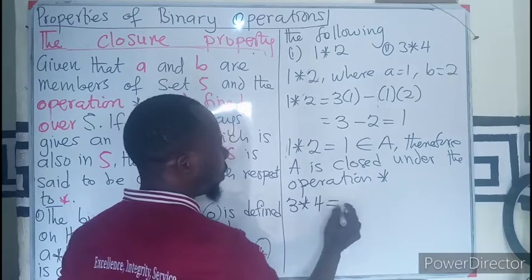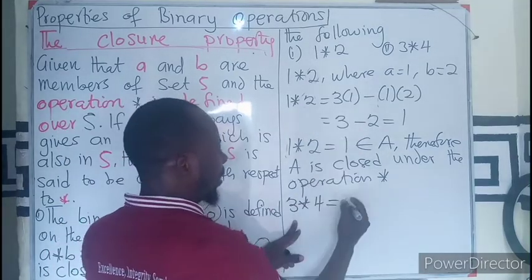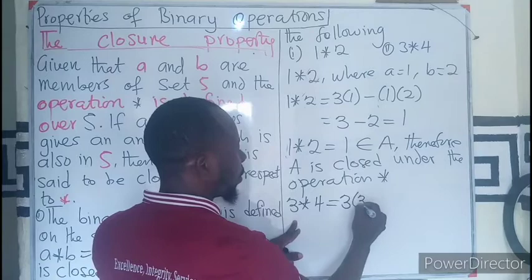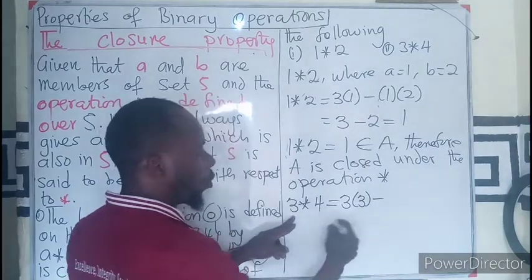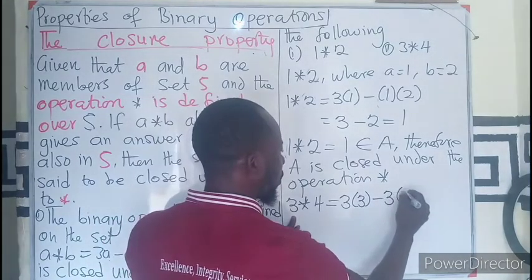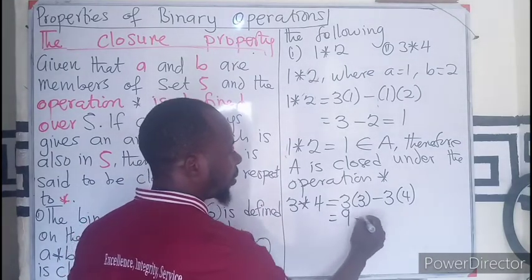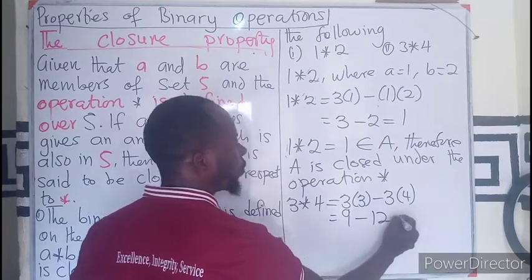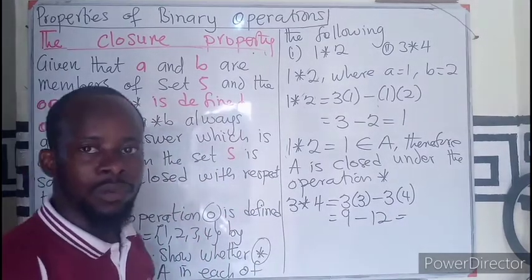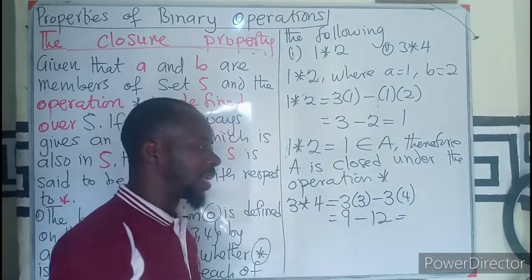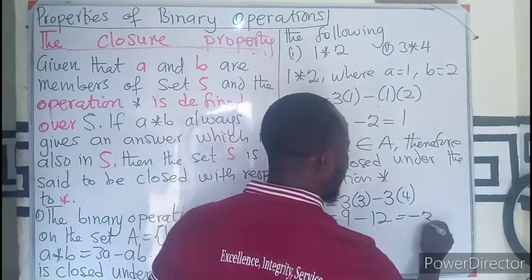this is going to be 3 times the first term minus their product. This will give us 9 minus 12. Since 9 is less than 12, we have negative 3.